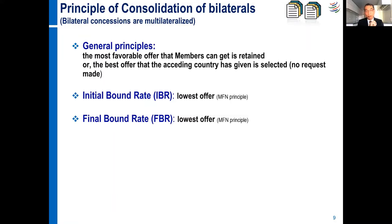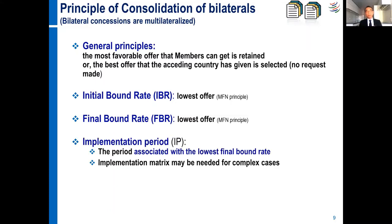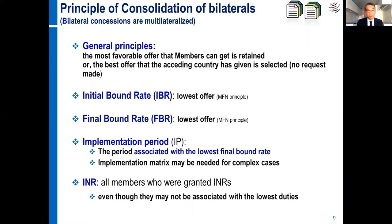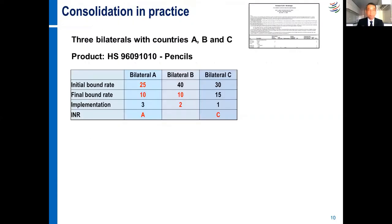We spoke about initial boundary and final boundary. If there is an implementation period, we take the period associated with the lowest final boundary. In this example, we have three WTO members relating as far as INRs are concerned. All the members who were granted INRs will be listed in the schedules of concession, even though those INRs may not be associated with the lowest duty.